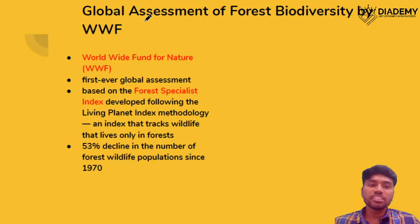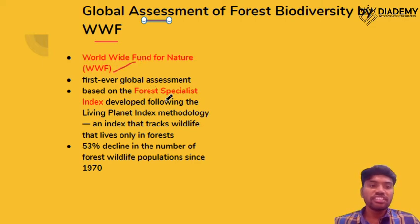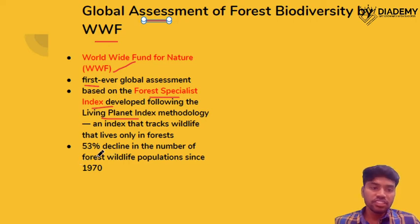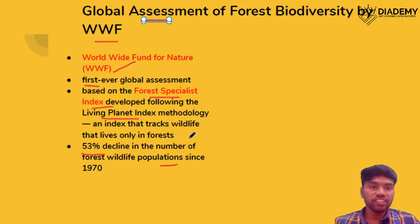The next topic is the Global Assessment of Forest Biodiversity given by WWF — it is the first ever global assessment on this subject. This is based on the Forest Specialist Index, and follows the Living Planet Index methodology. According to this assessment, there has been a 53% decline in the number of forest wildlife populations — this is a very important data point.